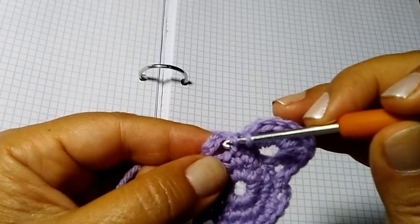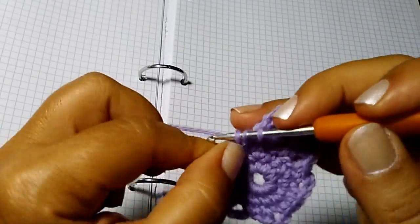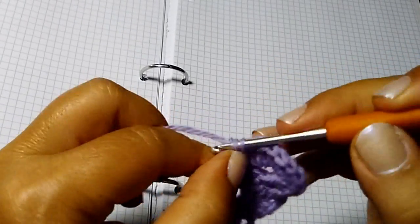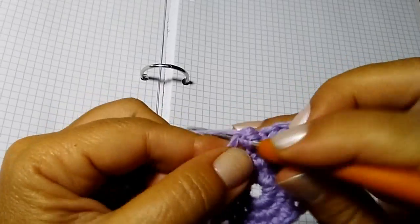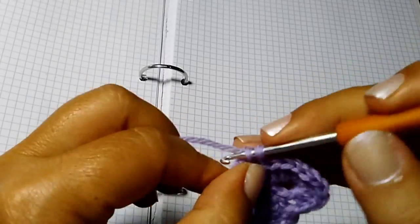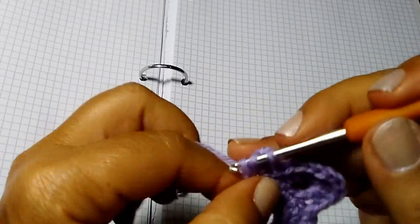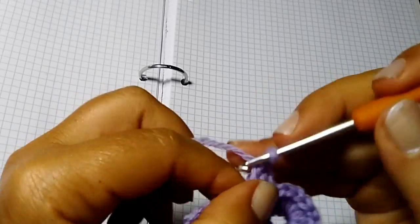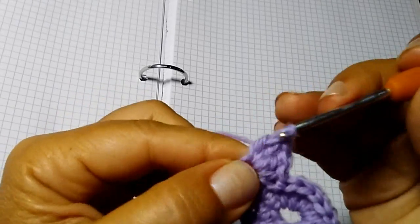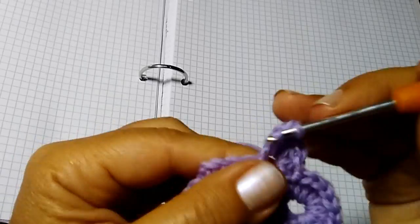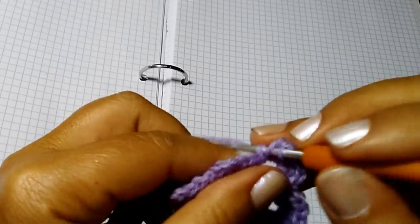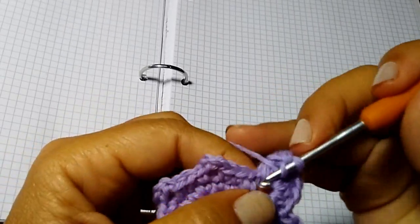Ripetiamo da qui: carichiamo il filo, entriamo con l'uncinetto nel prossimo occhiello di 3 catenelle, facciamo di nuovo 9 maglie alte: 1, 2, 3, 4, 5.